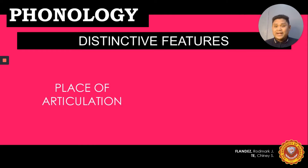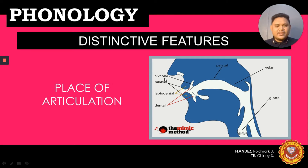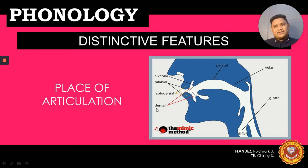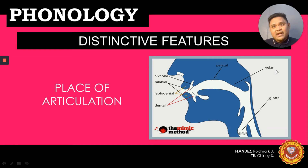Let's proceed to the place of articulation. We have: alveolar — tip of the tongue in the alveolar ridge; bilabial — two lips touching each other; labiodental — lower lip touches the upper teeth; dental — tip of the tongue at the inner edge of the upper teeth; palatal — the tongue at the hard palate; velar — dorsal tongue and soft palate; and glottal — throat passage.